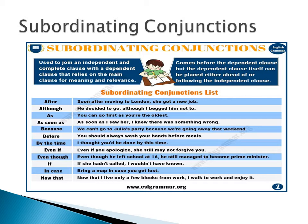This time, we will try to study subordinating conjunctions. It's used to join an independent and complete clause with a dependent clause that relies on the main clause for meaning and relevance. Moreover, it comes before the dependent clause, but the dependent clause itself can be placed either ahead of or following the independent clause. Meaning to say, the position of the dependent clause, whether placed at the beginning of the sentence or at the end of the sentence, does not change the meaning of the independent clause.